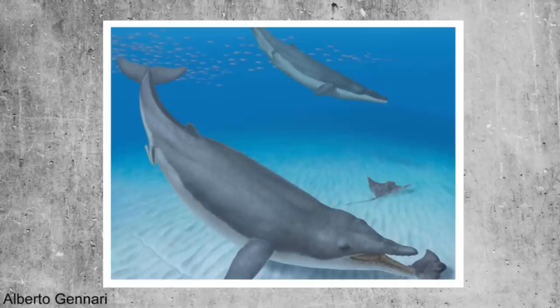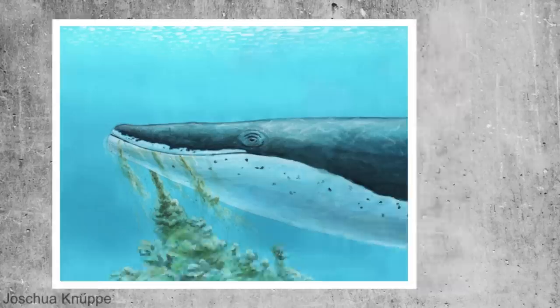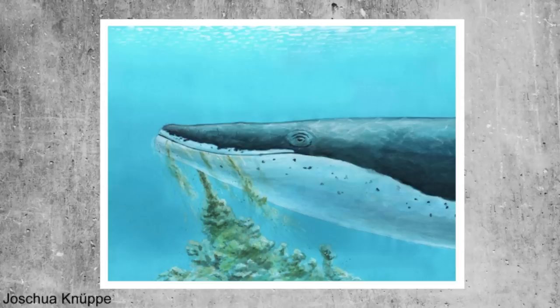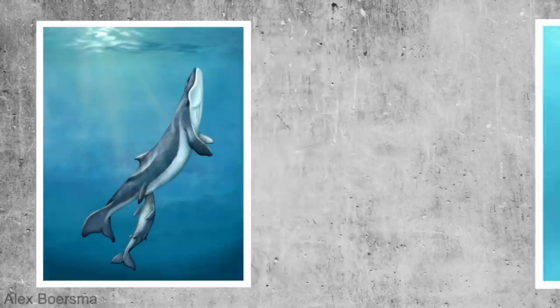The earliest baleen whale known was called Mystacodon and lived 36 million years ago. This whale also had teeth, but had a considerably wider mouth and unique skull shape compared to whales that came before. These features have led researchers to believe they fed by sucking up small invertebrates from the ocean floor, similar to how grey whales feed today. This could potentially show how these whales started on their path to filter feeding.